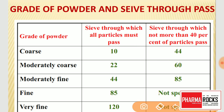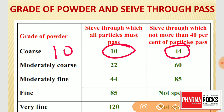While the sieve through which not more than 40% of particles pass is sieve number 44. So this powder is called 10 by 44 powder — coarse powder is 10 by 44 powder. In competitive exams, the question 'which of the following is the grade for coarse powder?' — the answer is 10 by 44. So 10 by 44 means our coarse powder.